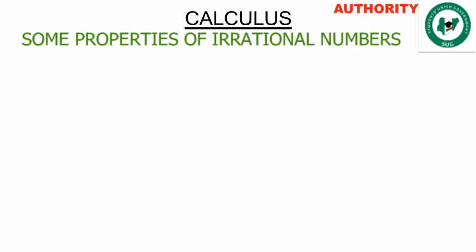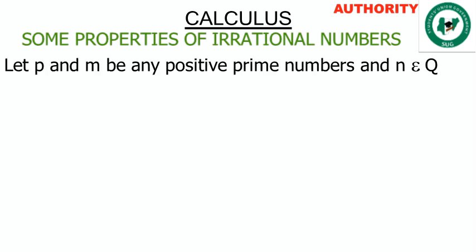In our last tutorial we defined irrational numbers. We said irrational numbers are decimal numbers that are non-terminating and non-repeating in blocks. Now let's look at the properties — the things that hold with irrational numbers.